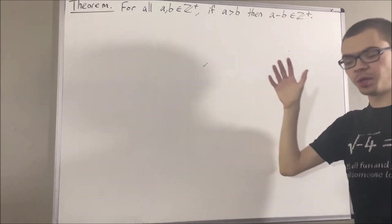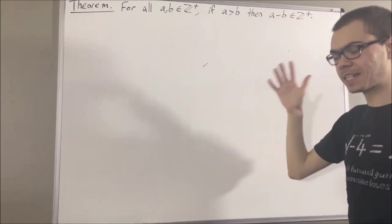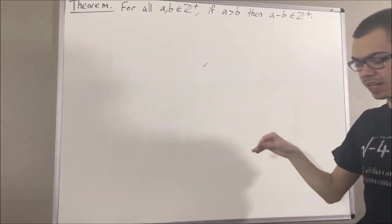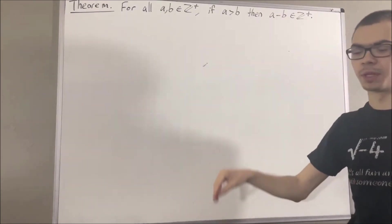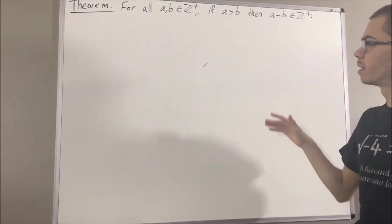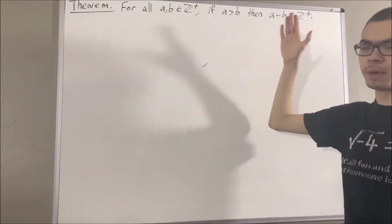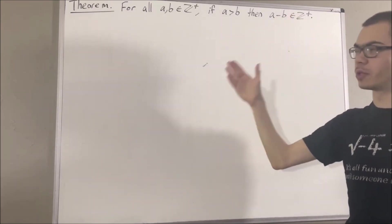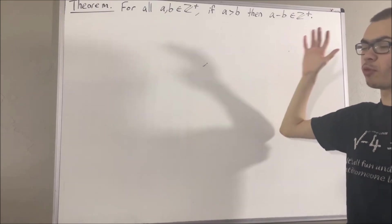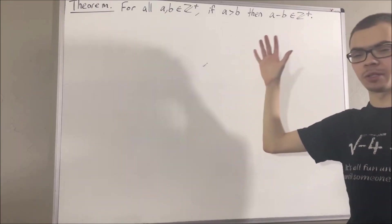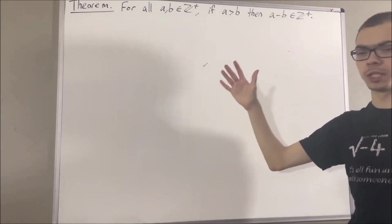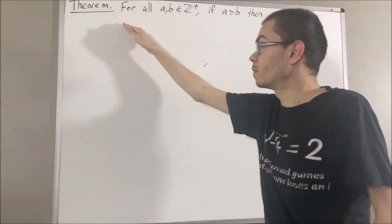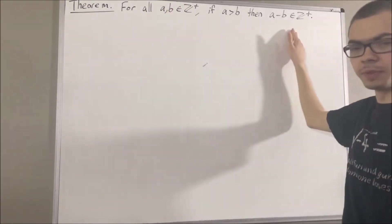Now, in this series we are using a list of 10 axioms for the real number system, and I'll leave that list of axioms in the description below. We have defined the positive integers as a subset of the real numbers, and we have shown that the principle of mathematical induction holds for the positive integers. So, to prove this theorem, we are going to be using induction.